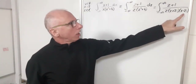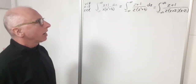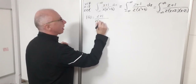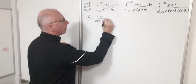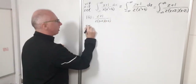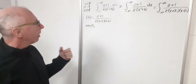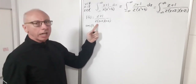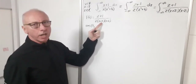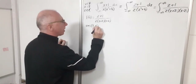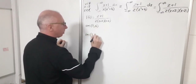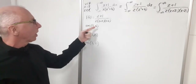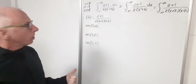Now we need to find the residues of f(z) = (z+1) / [z(z+2i)(z-2i)]. We can see there are poles at z=0, z=2i, and z=-2i. So we need the residue of f at zero, at 2i, and at -2i. We'll use the cover-up method to find each one quickly.